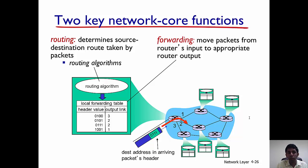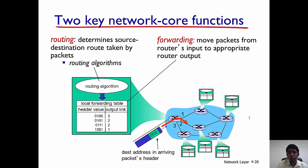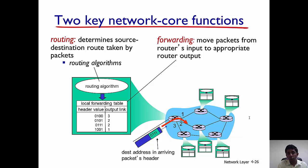The two important network core functionalities in a packet switched network are routing and forwarding. Routing is determining the path between a source and a destination. For example, if you want to travel from Boston to San Francisco by road, you determine the intermediate towns where you'll stop — that entire route is analogous to routing. Similarly in the internet, when a client requests data from a server, the path over which the data flows through the routers is determined using a routing algorithm.